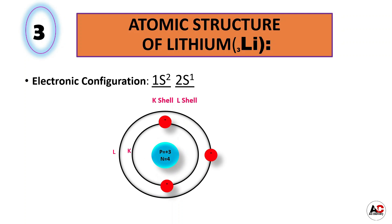As you know, the maximum accommodation of electrons in the K shell is 2. So whenever electrons are more than 2, they will move to the next higher orbit. We have also discussed the maximum accommodation in subshells: in the s subshell the maximum is 2, in the p subshell maximum electrons can accommodate up to 6, in the d subshell 10 electrons can accommodate, and in the f subshell a maximum of 14 electrons can accommodate.